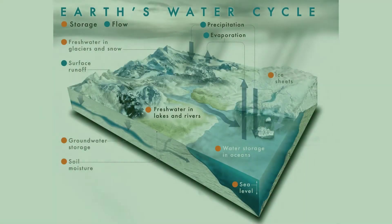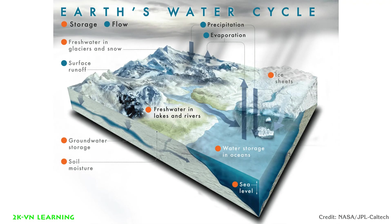The sun's heat causes glaciers and snow to melt into liquid water. This water goes into oceans, lakes, and streams. Water from melting snow and ice also goes into the soil, where it supplies water for plants and the groundwater that we drink.